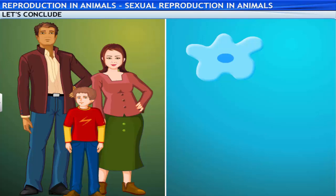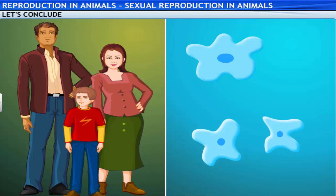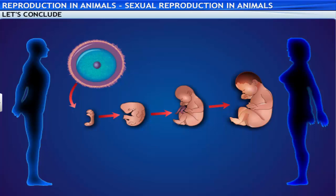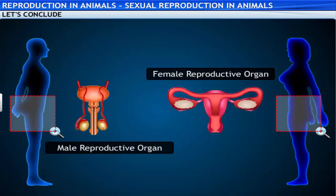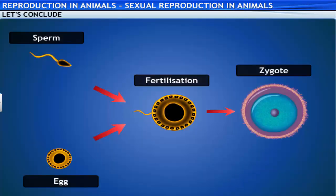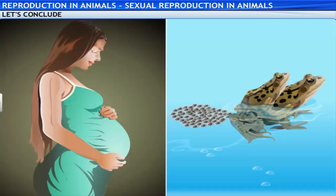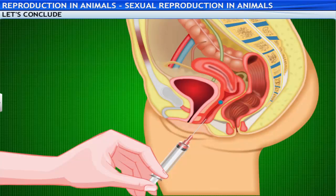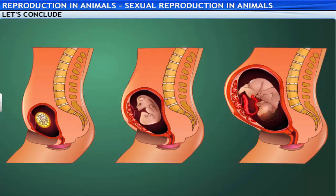You have completed the lesson on sexual reproduction in animals. In this lesson, you have learned to identify the different modes of reproduction in animals, define sexual reproduction, list the male and female reproductive organs, explain the process of fertilization, distinguish between internal and external fertilization, explain in vitro fertilization, and explain how an embryo develops. Hope you enjoyed this learning experience.